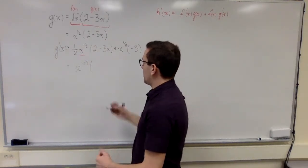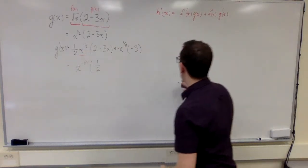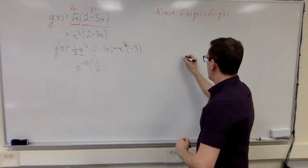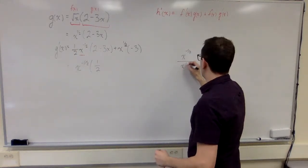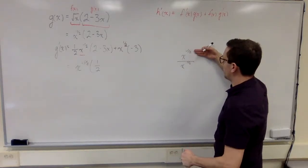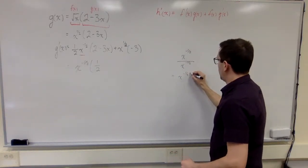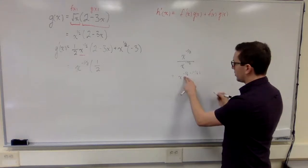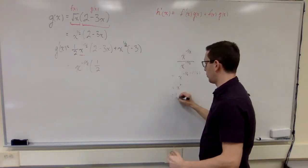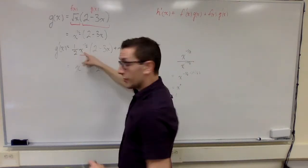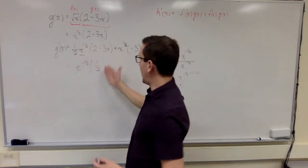When I take out x to the minus a half, I'm left with one half. To find what replaces the x to the minus a half term, I use exponent laws. I'm dividing x to the minus a half by x to the minus a half — subtracting the exponents gives negative a half plus a half, which equals zero. X to the power of zero is just one, so that term disappears entirely. We don't even have it inside the brackets, leaving just two minus three x.